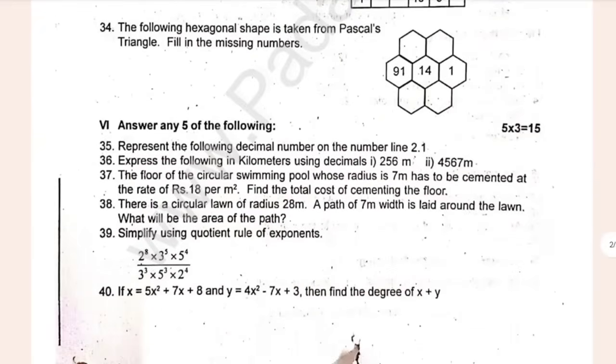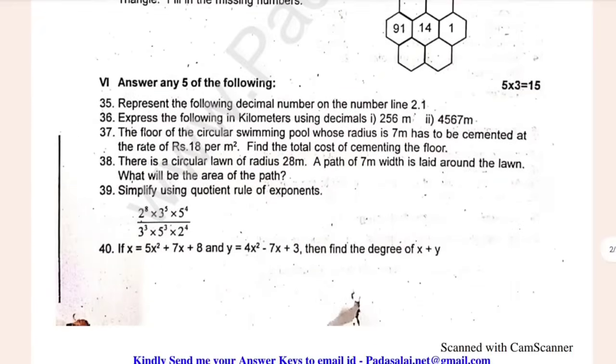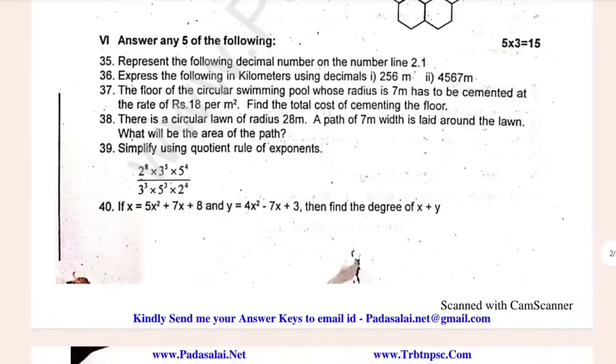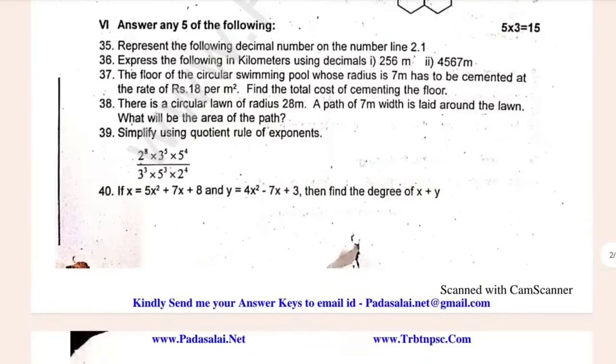Line 44. 6th question, 3 marks. Represent the following decimal number on the number line: 2.1.